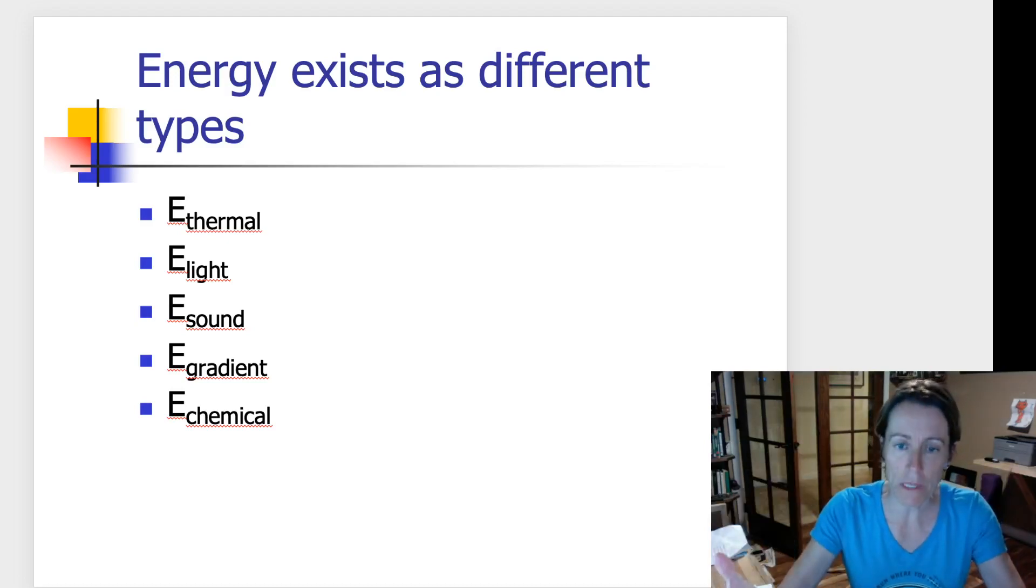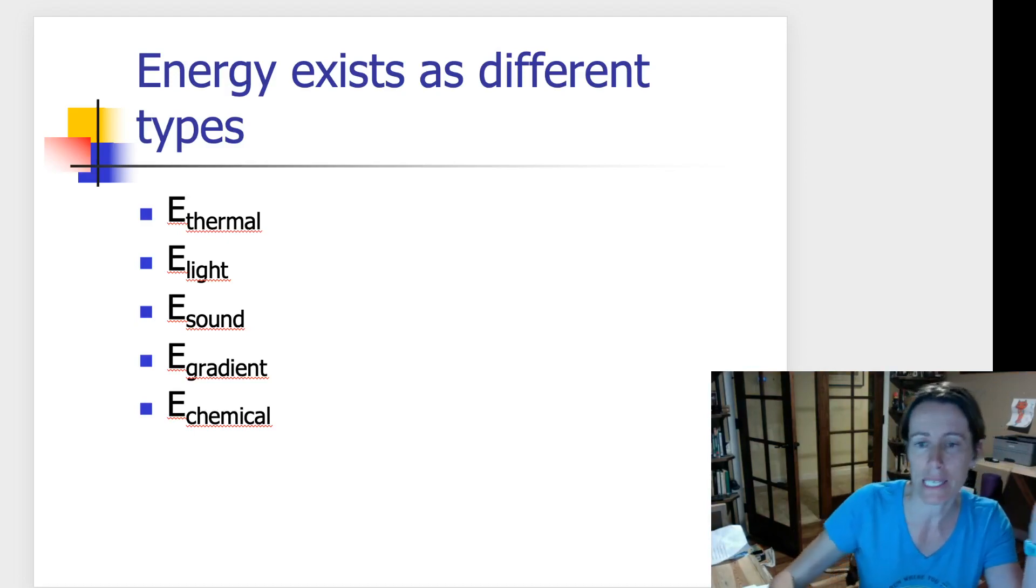So energy can exist as different forms. And if we can understand the different forms of energy, then we can start thinking more broadly about how they all interconnect. On this slide, I have a list of different types of energy. The E is standing for energy, but there's different types. We've given them names by putting a little subtext down here. So this is E thermal. Thermal is a fancy word for heat. This is talking about the energy that is found in things that are warmed up or that are warmer than they were when they were cold.